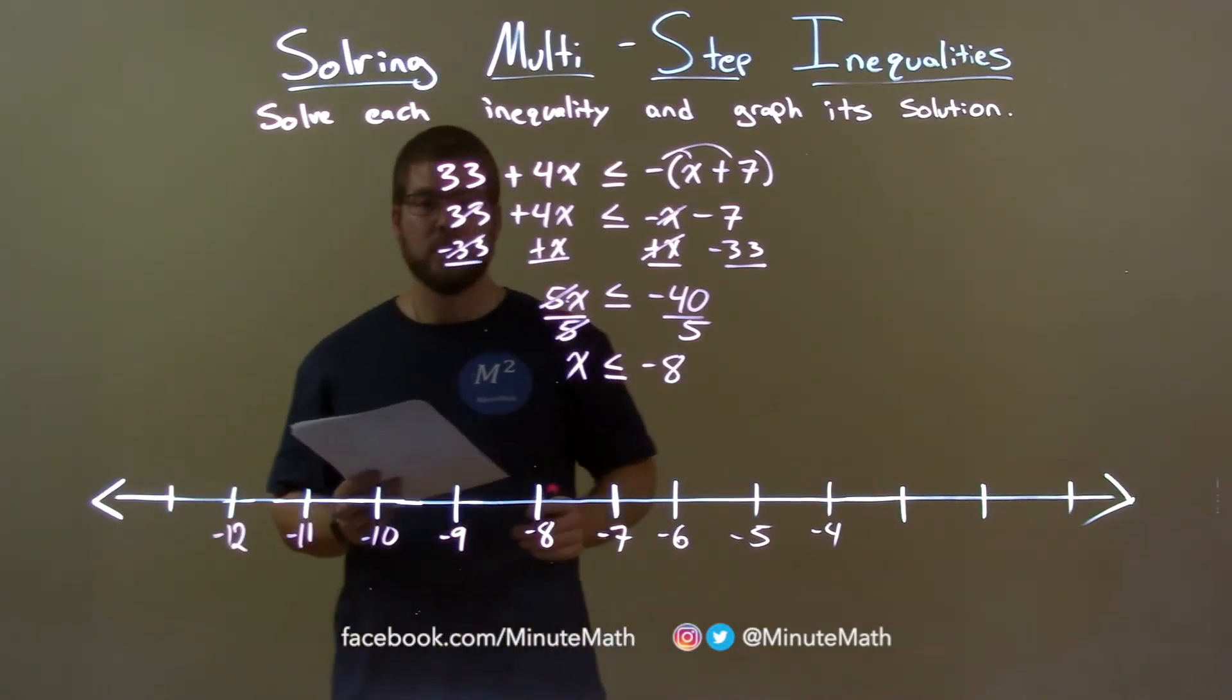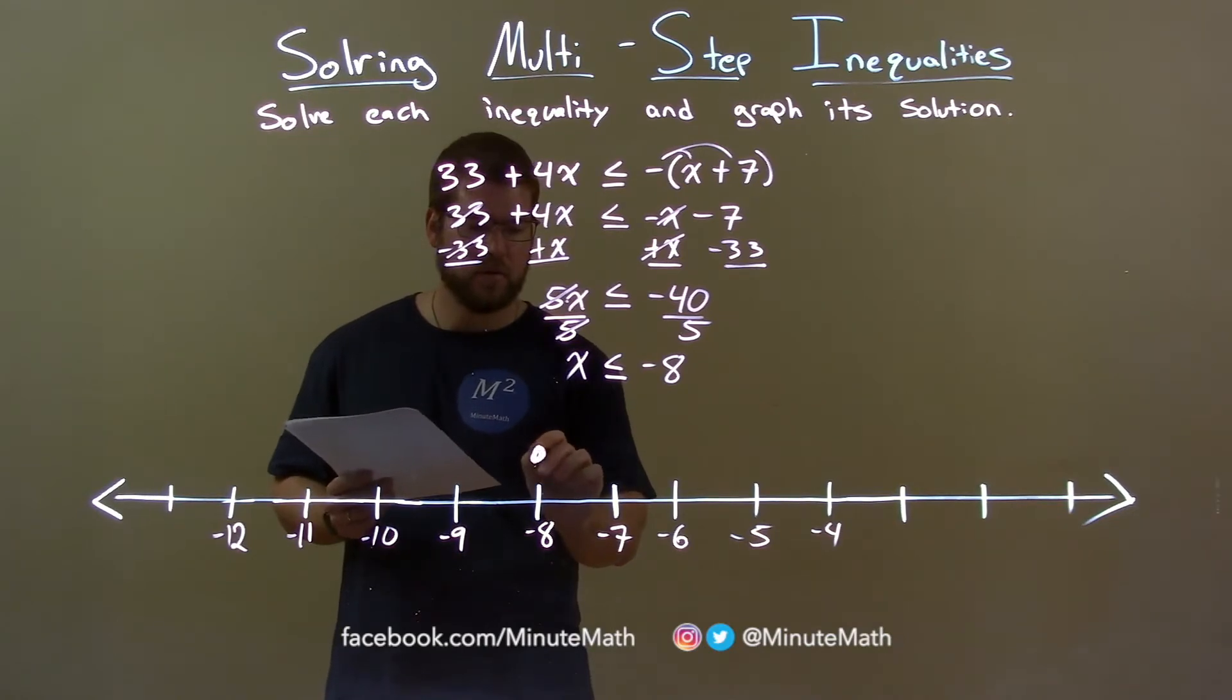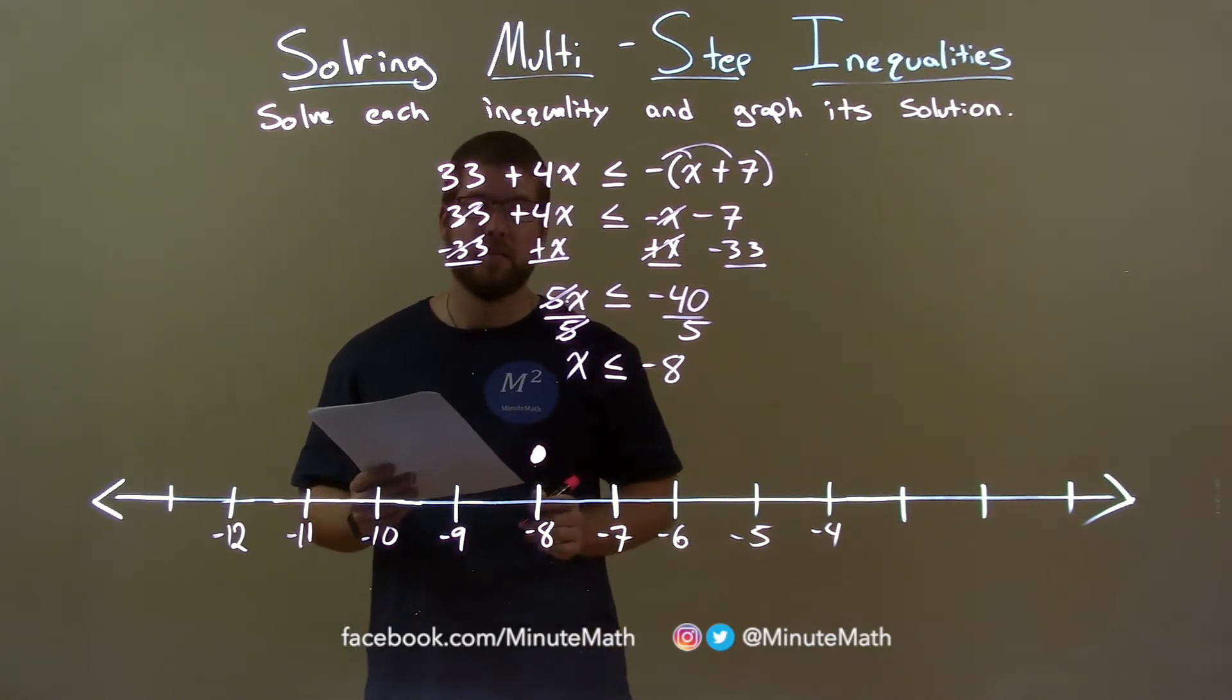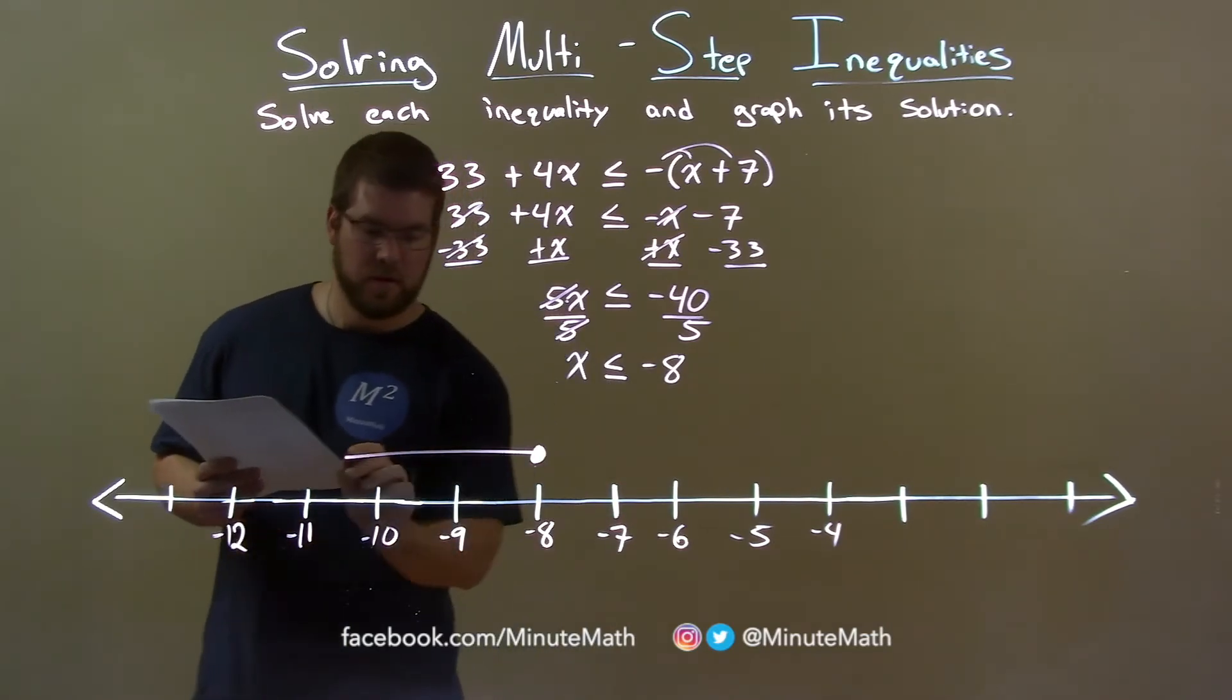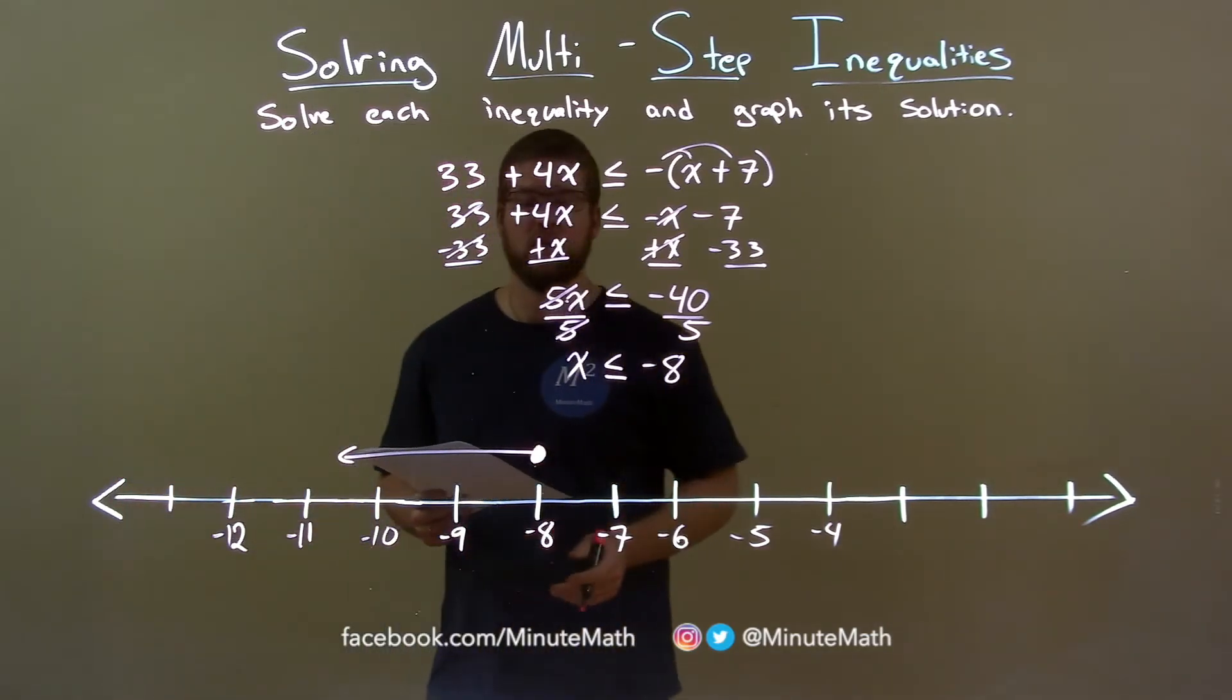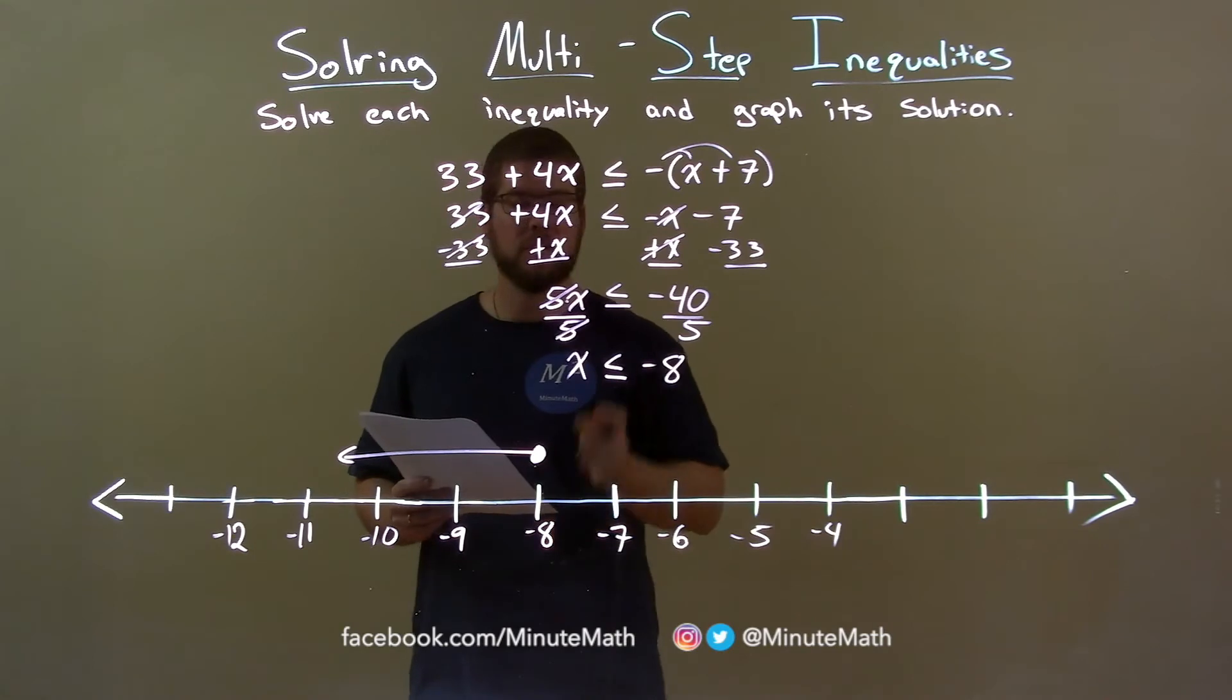Since x can equal negative 8, that gives us a closed circle there at negative 8. x is less than negative 8, so the arrow goes to the left. And there we have it. Our graph matches our final answer, x is less than or equal to negative 8.